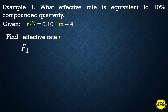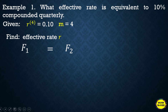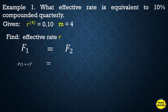To find this, we set F1 equal to F2 — the future value compounded annually equals the future value compounded more than once a year. The formula for compounded annually is P times (1 + r) raised to t. For compounded more than once a year, the formula is P times (1 + r_m / m) raised to mt.